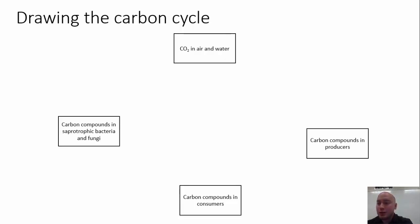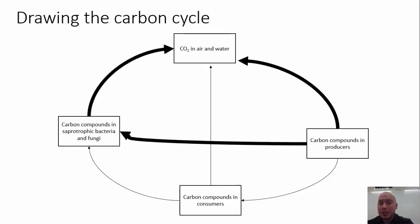Next, you want to draw the arrows to show the fluxes. Fluxes are the transfers of carbon from one sink to another. The thickness of your arrows will indicate the size of the flux. Start with your thinnest arrows: producers to consumers, consumers to fungi and consumers to air. Next, you want to draw slightly thicker arrows for producers to fungi, fungi to air, and producers to air. Finally, you want a really big arrow from carbon dioxide in the air and water to carbon compounds in producers.